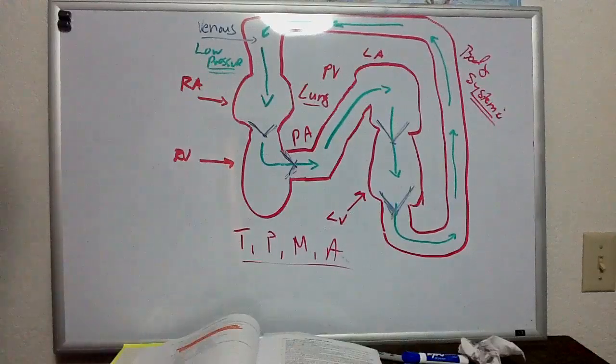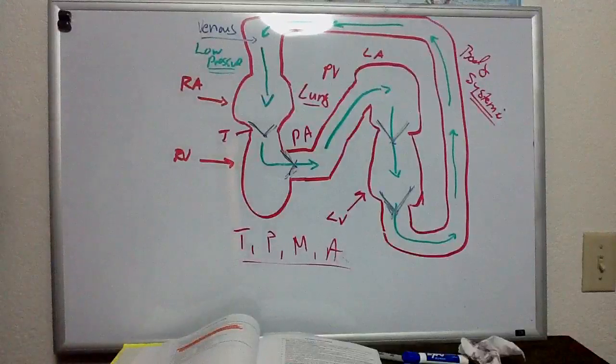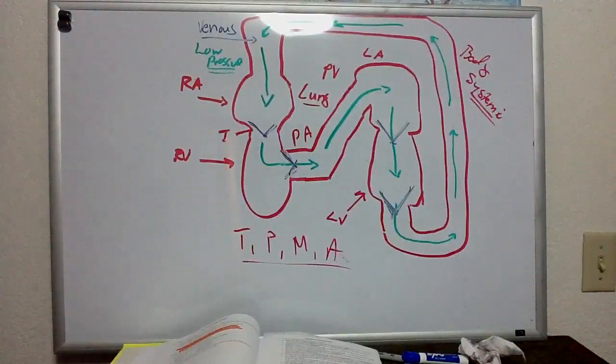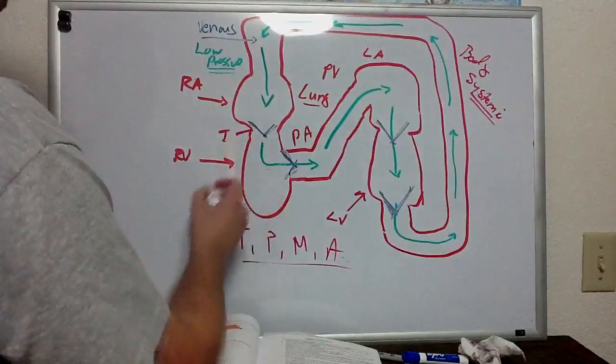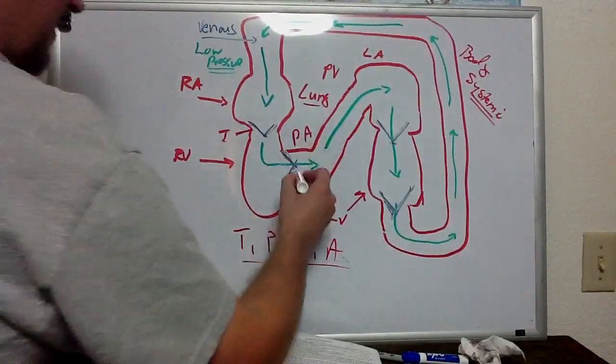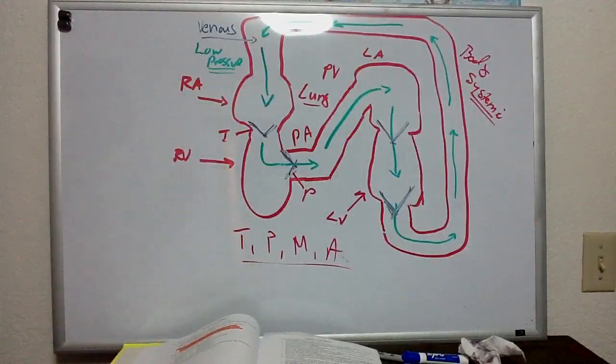So the first valve that we encounter between the right atrium and the right ventricle is the tricuspid valve. It has three cusps. We call it a tricuspid valve. The second valve that separates the right ventricle from the pulmonary artery is the pulmonary valve, or what we know as a semi-lunar valve.